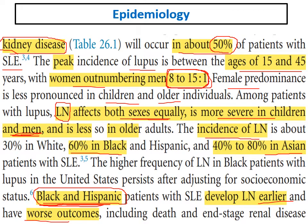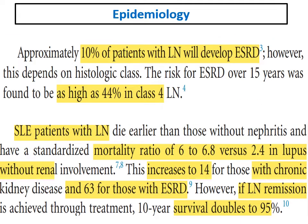To summarize: lupus nephritis affects both sexes equally, is more severe in children and men, and has a higher incidence in Black populations. Black and Hispanic patients develop lupus nephritis earlier with worse outcomes — very important for clinical practice and for exams. Approximately 10 percent of patients with lupus nephritis will develop end-stage renal disease, and this percentage increases according to the histological class.